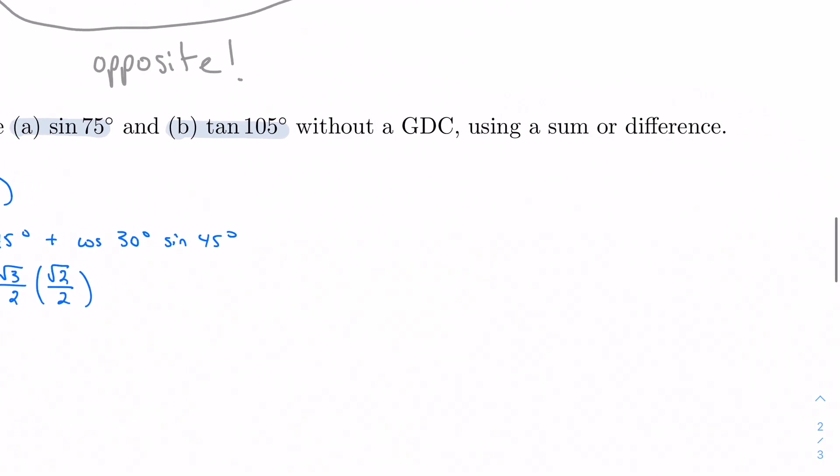Same logic applies for tangent. For tangent 105, I want to know if I have some convenient values that I know that I could maybe add together to get what I'm trying to get to. And I do. I could do, maybe 135 minus 30. That's the first thing I can think of offhand that seems to work. So let's apply our formula again. We have tangent A plus tangent B divided by 1 minus, same sign on the top, opposite sign on the bottom.